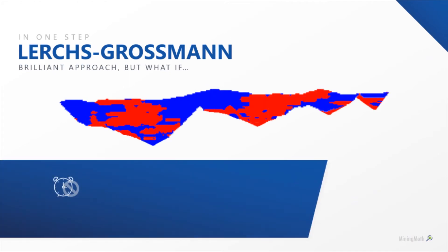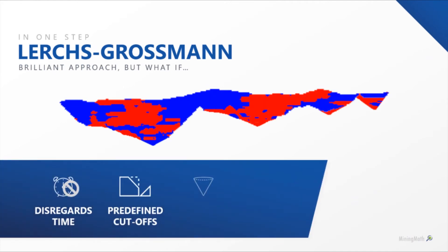The Lerchs-Grossman algorithm was a brilliant approach for its time. However, it considers that all material is extracted at once, disregarding time. The destination of each block needs to be predefined without the overall optimization criteria, and the results are not practical, as they generate cone-shaped pits. Also, it's based on block precedences, which incur approximation errors on slope angles. Nevertheless, for decades it has been a brilliant approach.